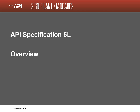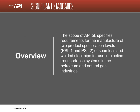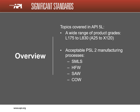The scope of the document is to specify the requirements for manufacturing two product specification levels, PSL 1 and PSL 2, in seamless or welded pipe for use in pipeline transportation systems in the petroleum and natural gas industry. API 5L covers pipe grades A25 to X120, where the number associated with the grade is the approximate yield strength of the product in 1,000 pounds per square inch. A25 would indicate a yield strength of approximately 25,000 pounds per square inch. The actual test pressure due to rounding from SI units is 25,400 pounds per square inch.